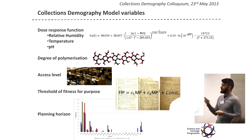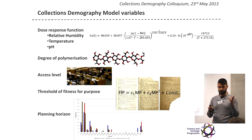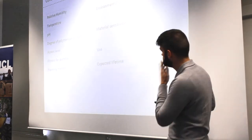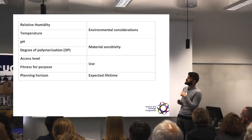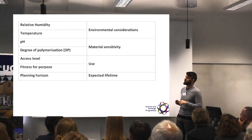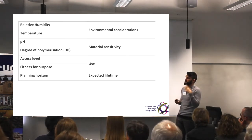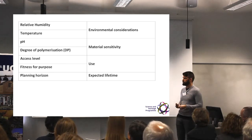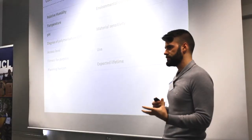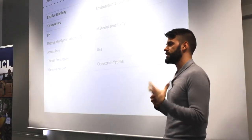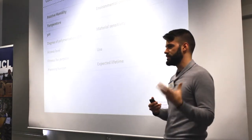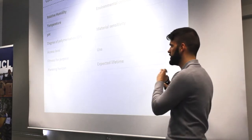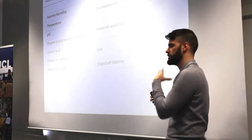And then finally the planning horizon — as I said, 500 years, though it could be any other time period. I grouped all this together in a table, calling relative humidity and temperature 'environmental considerations,' pH and degree of polymerization 'material sensitivity' — which is the starting point for the model — access level as what the collection is meant to be used for, and then the planning horizon, which we tend to call the 'expected lifetime.' I can't help myself saying this will be the end of the lifetime, although we've reiterated that when it's the end of the graph, it doesn't mean the collection evaporates — but that's why I put it in there like this.